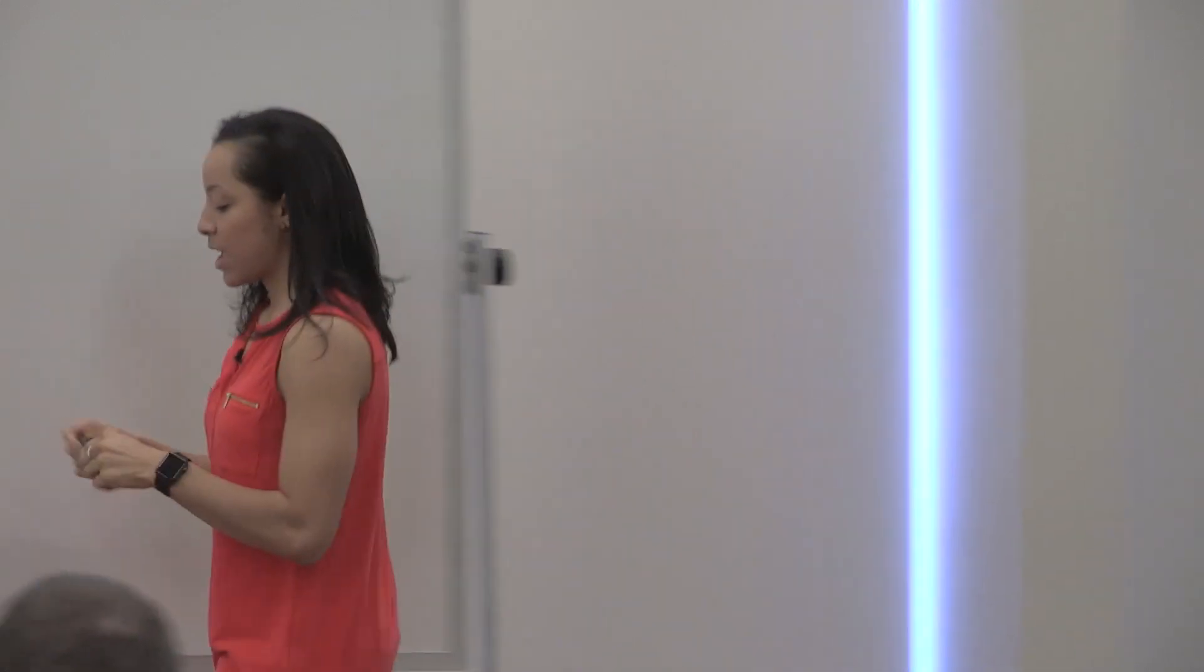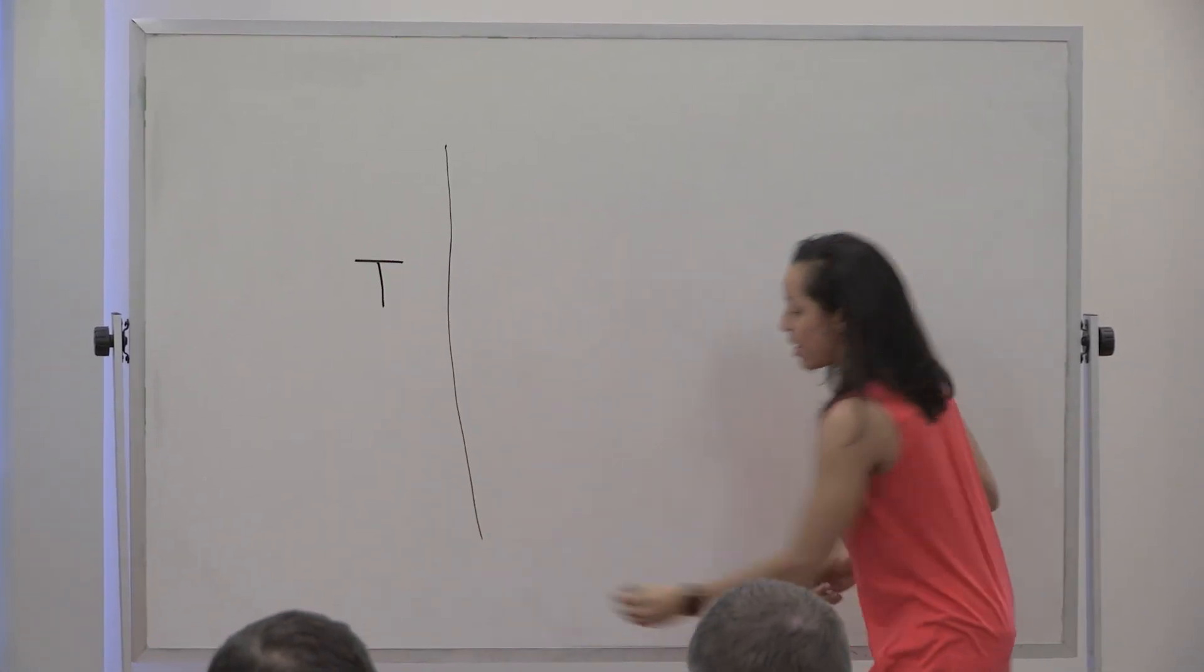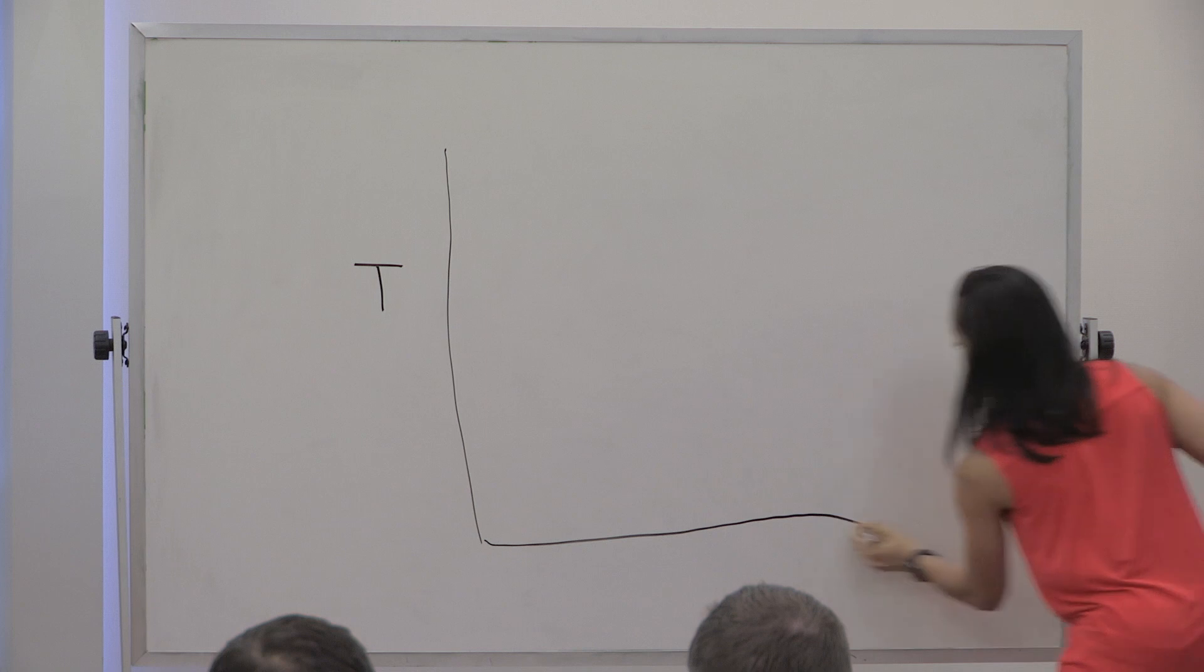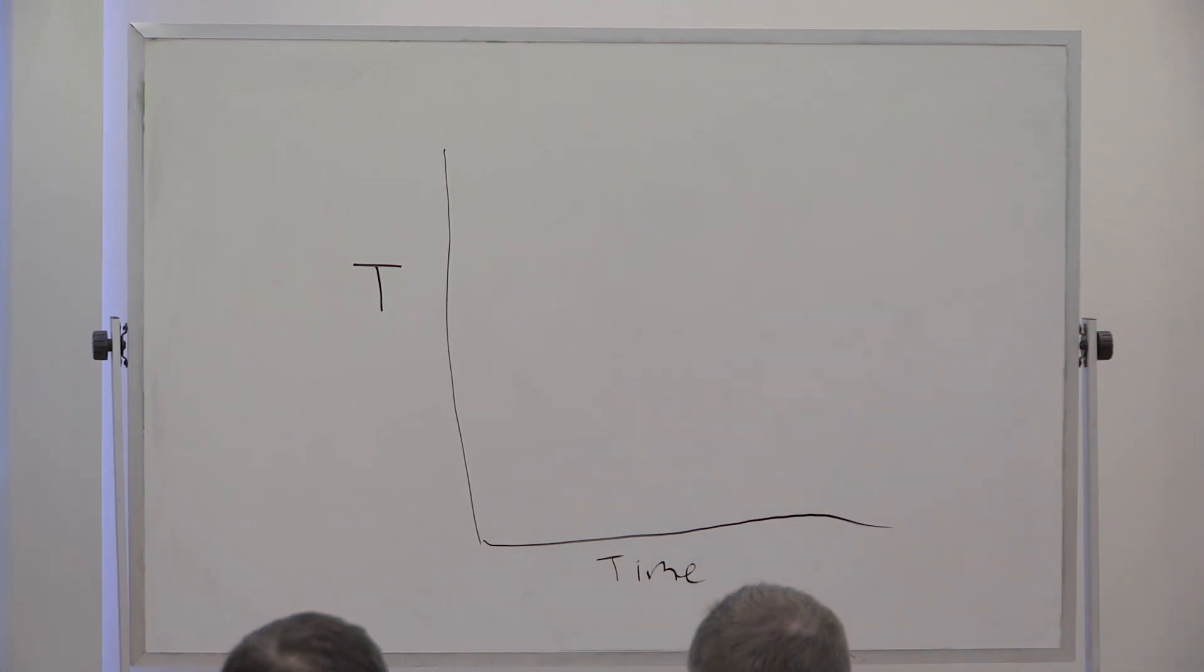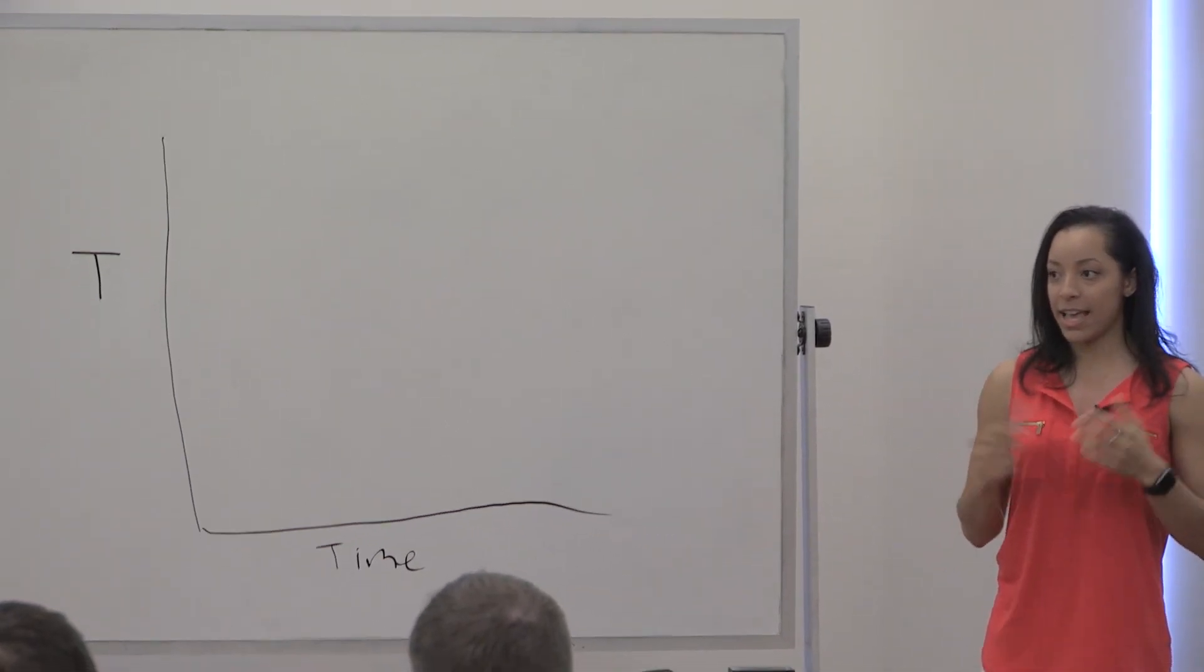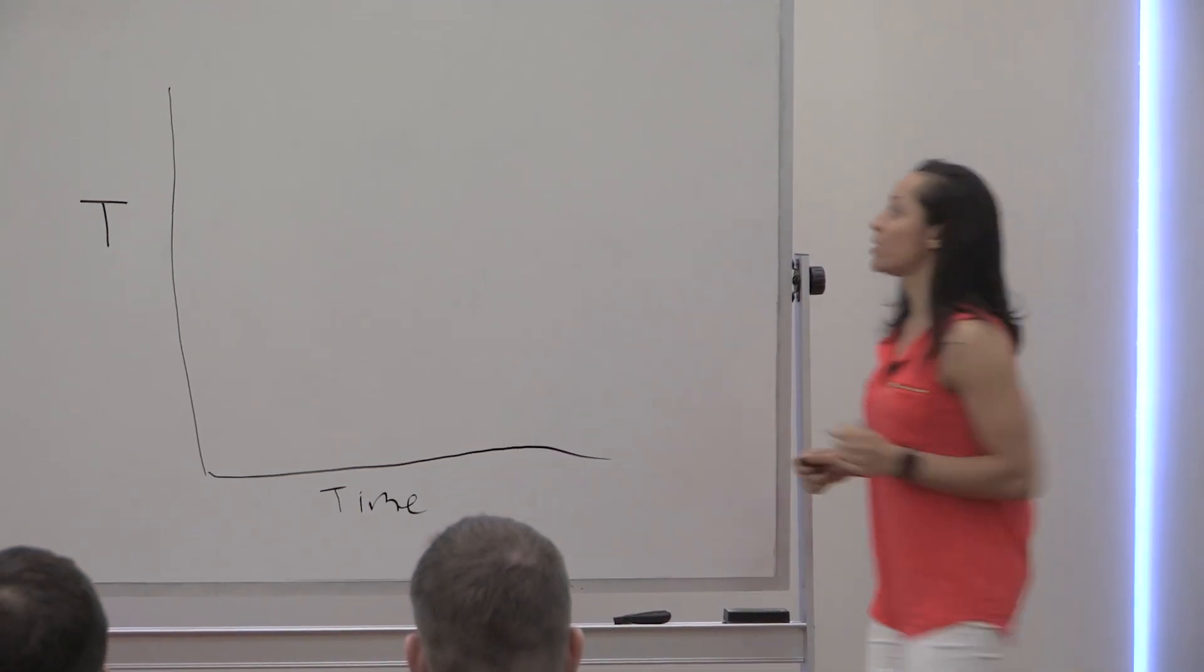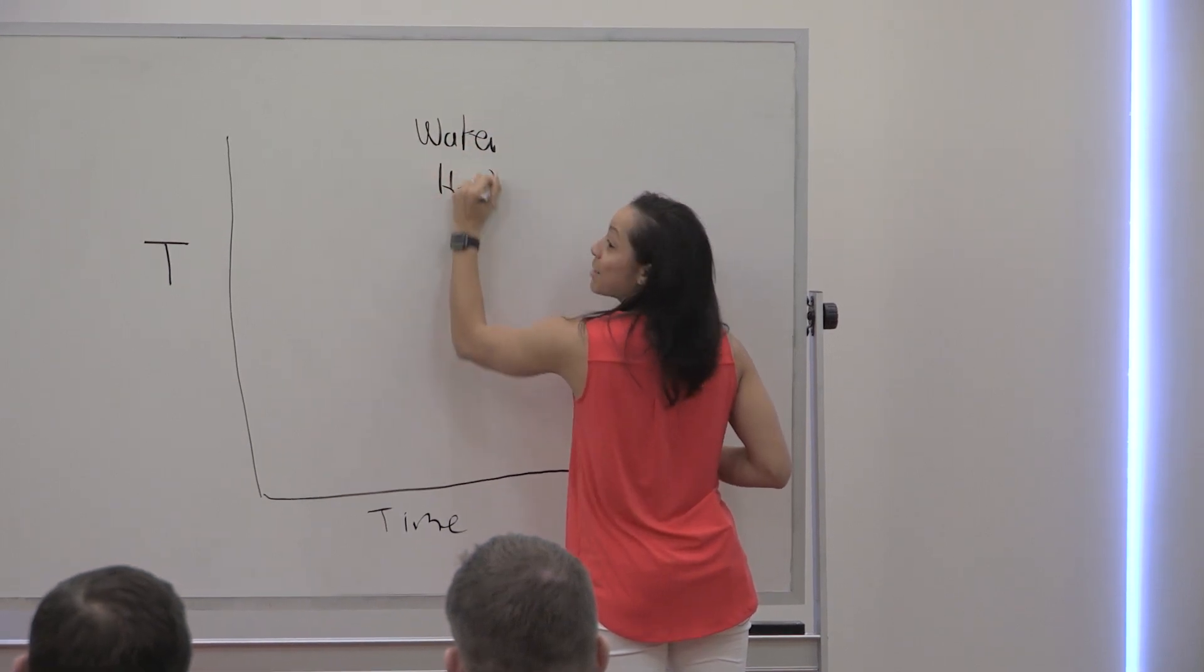Now, bear with me here. I'd like you to think back to your chemistry days. So if you can remember, there's something called a heating curve, and I'll show you what it looks like. So on the y-axis, you have temperature, and on the x-axis, you have time. Sorry, I'm left-handed.